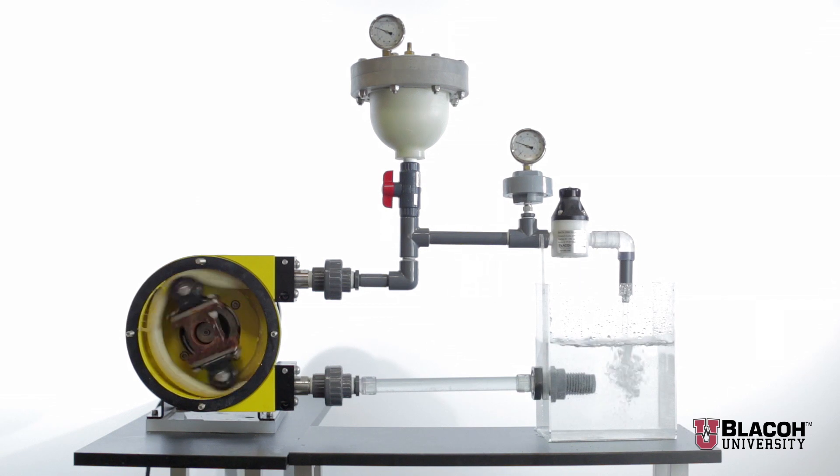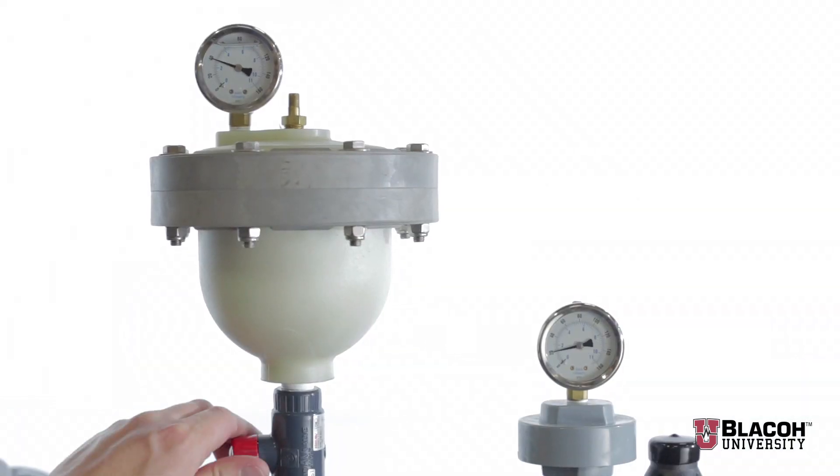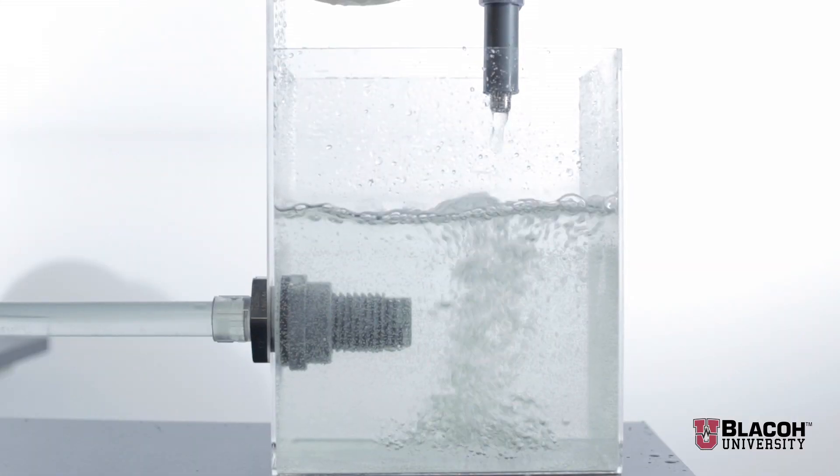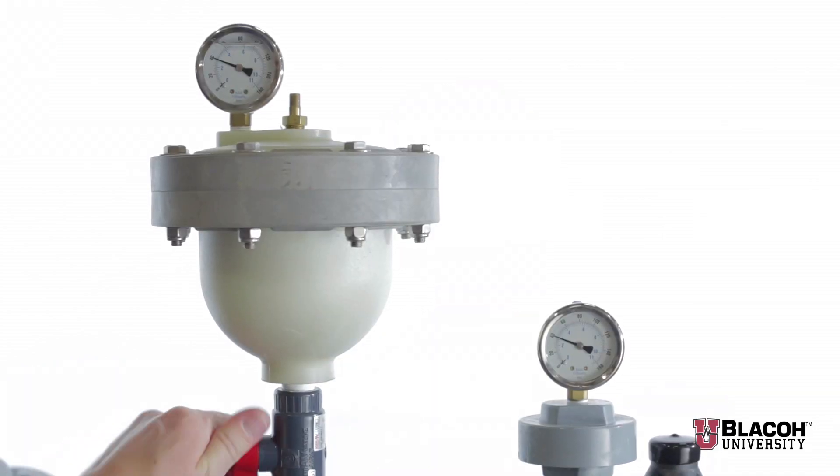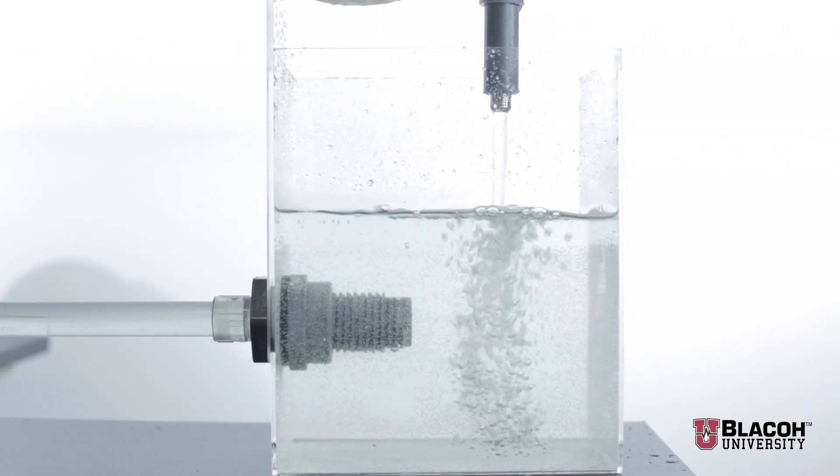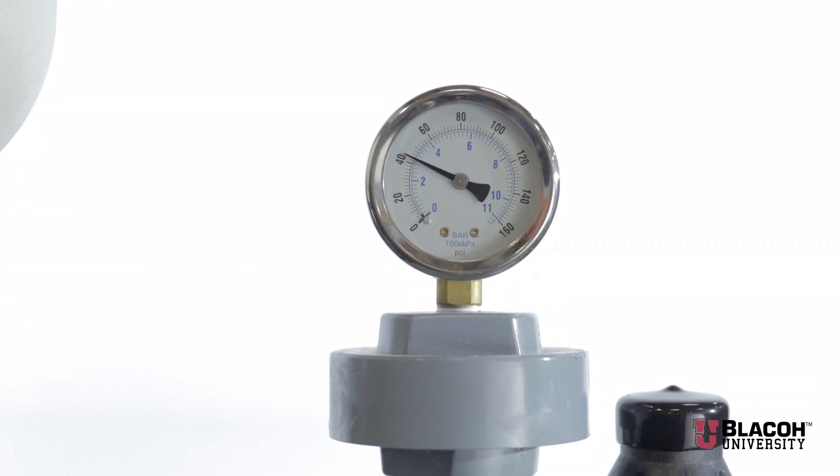And again, as we deactivate the dampener you will see the pulsation and the wide variation in pressure. Activating the dampener again immediately smooths the flow and eliminates the wild pressure swings.